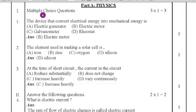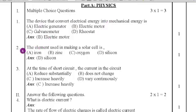The first main section is multiple choice questions — three questions in total. First question: the device that converts electrical energy into mechanical energy. That device is an electric motor, so option A is the answer. Second question: the element used in making a solar cell. The answer is silicon. Option D is the right answer.